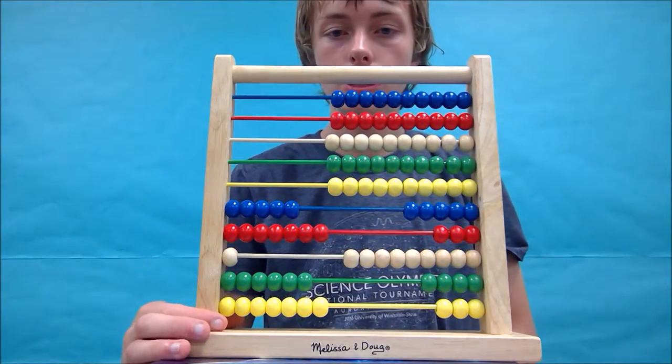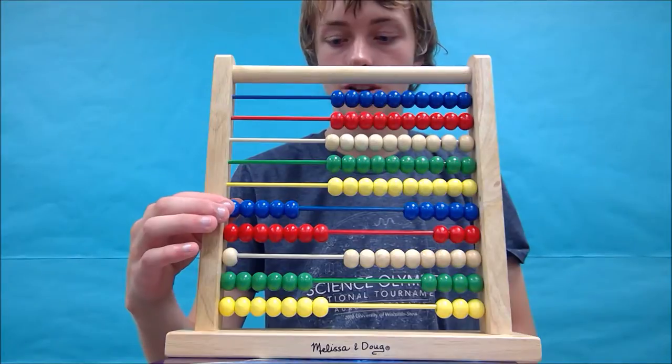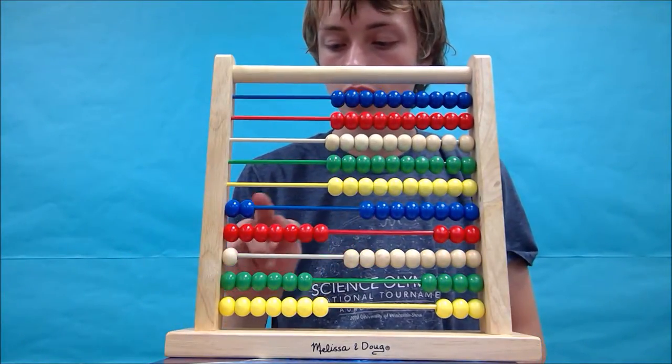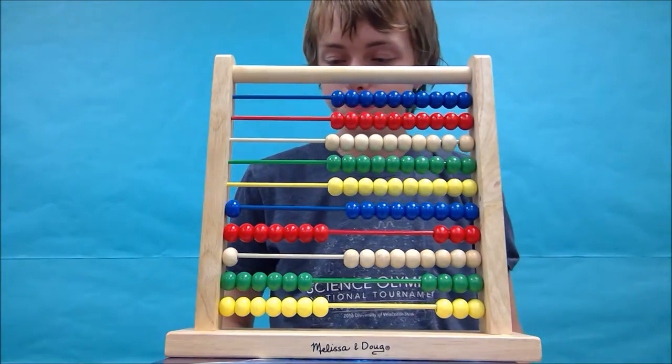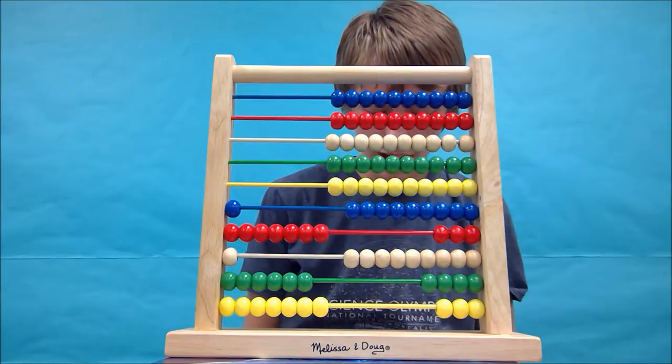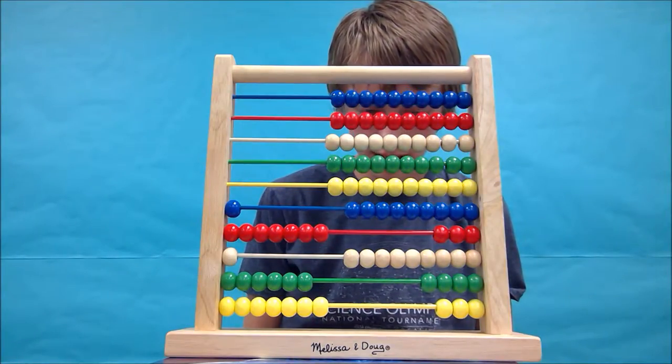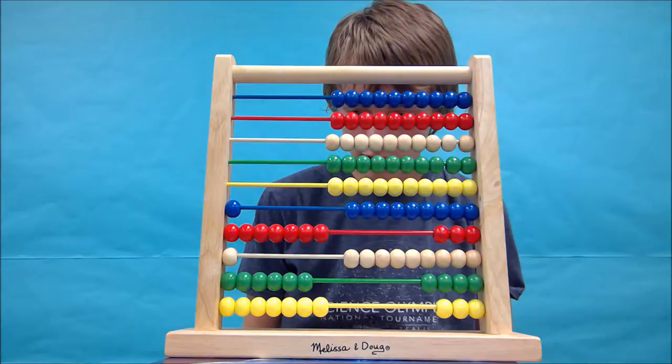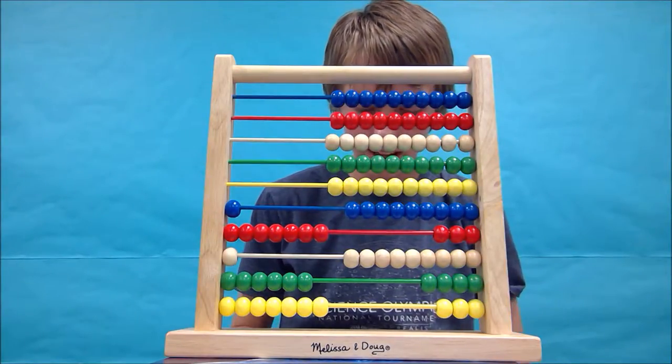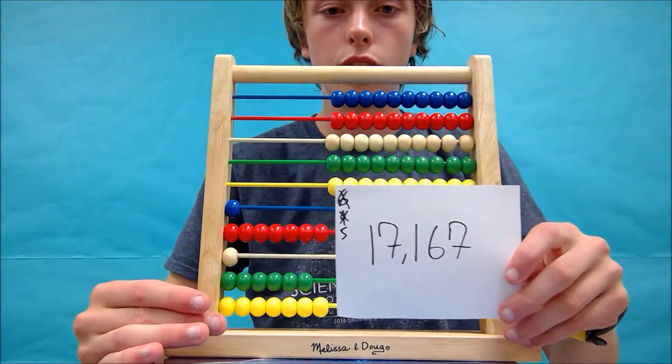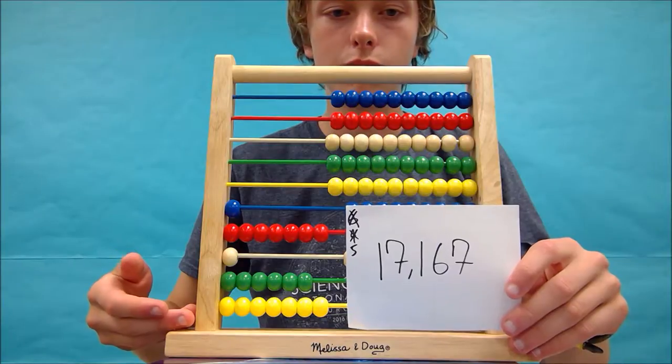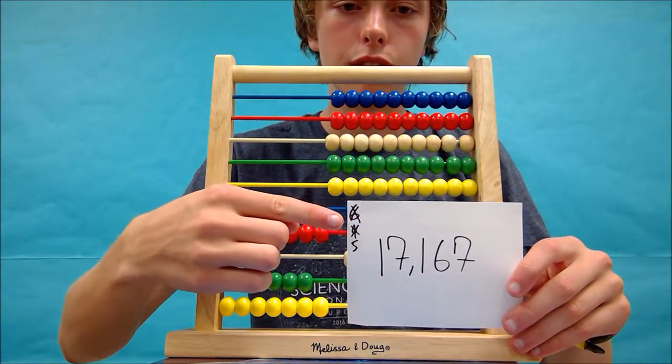We have now removed all the beads we need to remove except for the 10,000's. We need to remove 4 from here. 1, 2, 3, 4. And this is our answer now. Now we can write it starting from the top to the bottom. We're going to have 1, then a 7, then 1, 6, 7. To give us an answer of 17,176. Your abacus should look like this after you've completed the problem. And my notes are in the upper corner right here.